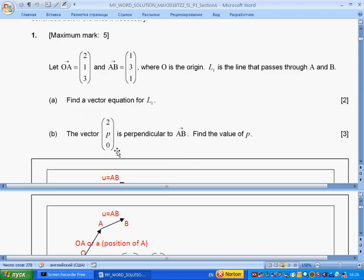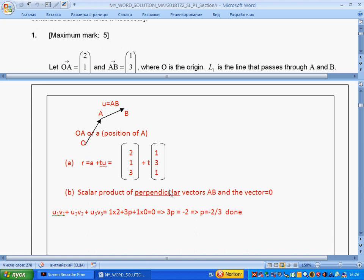The vector PO is perpendicular to AB. Find the values of P. The scalar product of perpendicular vectors AB and the vector should equal zero. There's a formula in the formula booklet for scalar multiplication of two vectors. We substitute the values and get 3P equals minus 2, so P equals minus 2 over 3. This question is done.